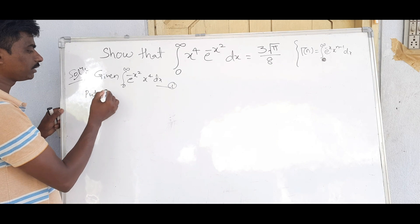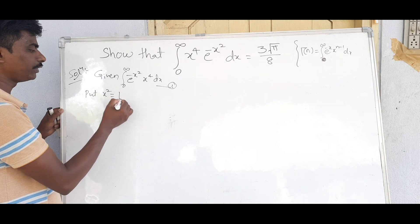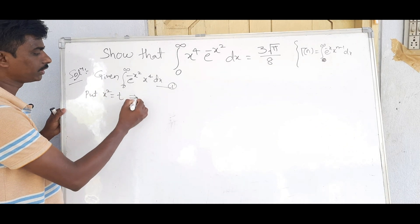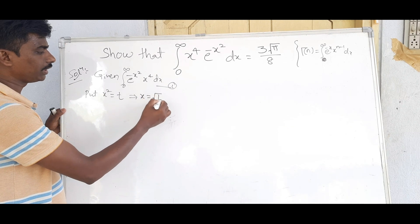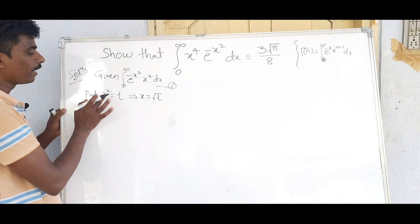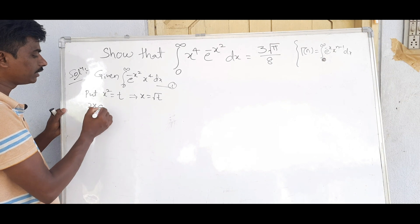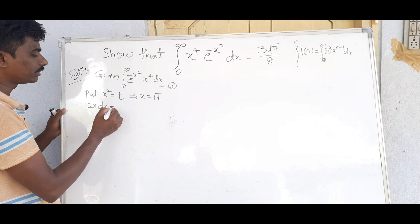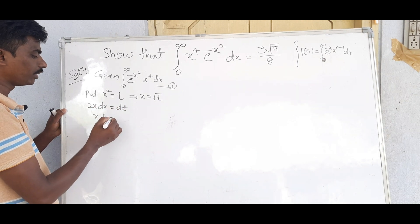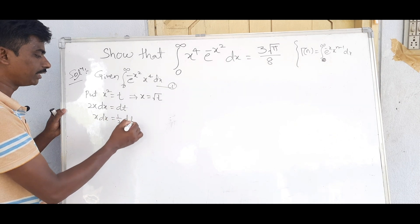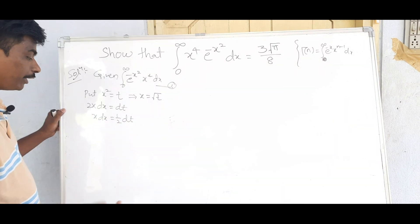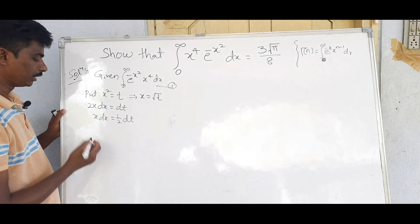Put x² = t, so x = √t. Taking the derivative: 2x dx = dt, therefore x dx = (1/2) dt.